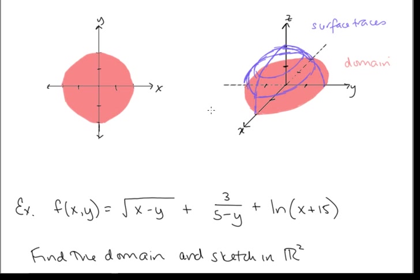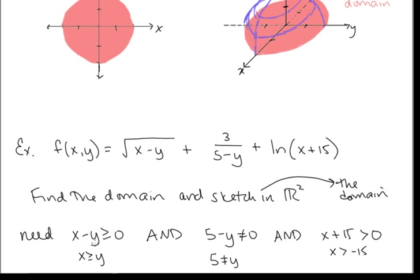Now let's look at another example: f(x, y) = √(x − y) + 3 / (5 − y) + ln(x + 15). Find the domain and sketch in R². This function has all the things we need to watch out for: an even root (the radicand must be ≥ 0), a fraction (the denominator cannot be zero), and a logarithm (the argument must be strictly positive).